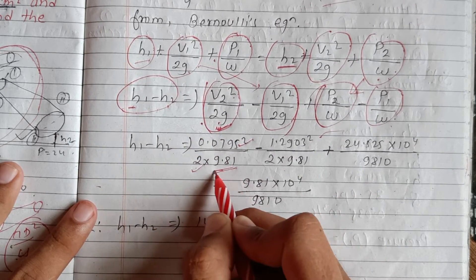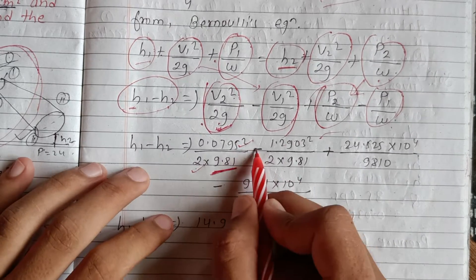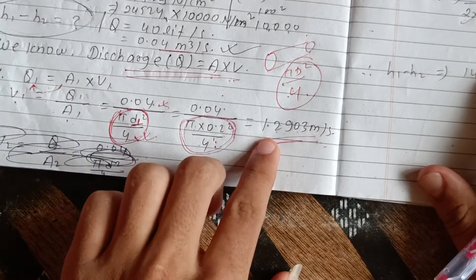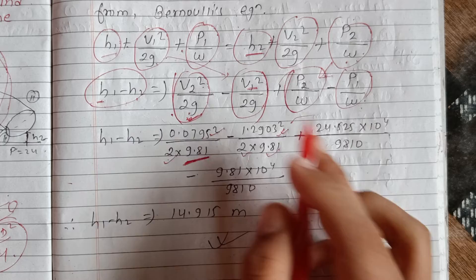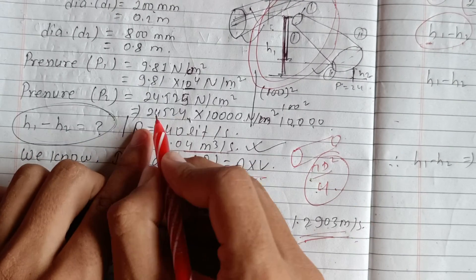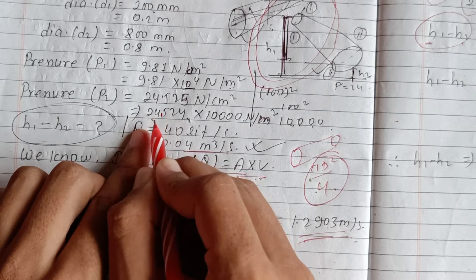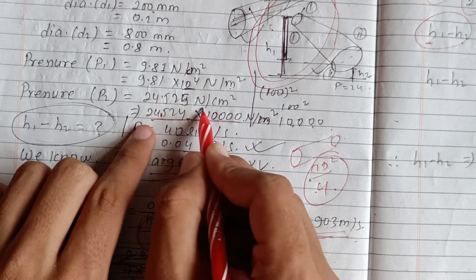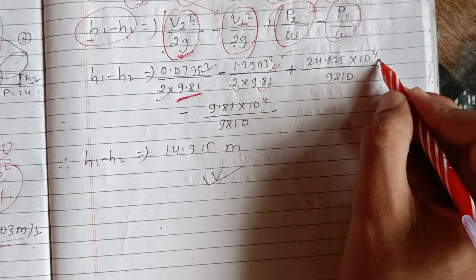For V1 squared over 2g, we use V1 equals 1.29 meters per second, so V1 squared divided by 2 into 9.81. For pressure P2 at the top, the value is 24.525 Newton per cm square, converted using 10 to the power 4. The weight density W equals 9.81 into 10 to the power 4.